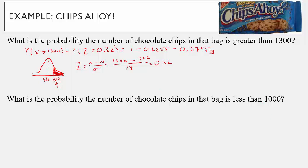Now let's do the more interesting problem. They said there are 1,000 chips in every bag, so let's find the probability that you would grab a random bag with less than 1,000 chips. If this probability is greater than zero, their advertising claim is obviously not true. Drawing the curve centered at 1,262, I want to find the probability that a bag doesn't have 1,000 chips. The Z-score is Z = (X − μ) / σ = (1,000 − 1,262) / 118.